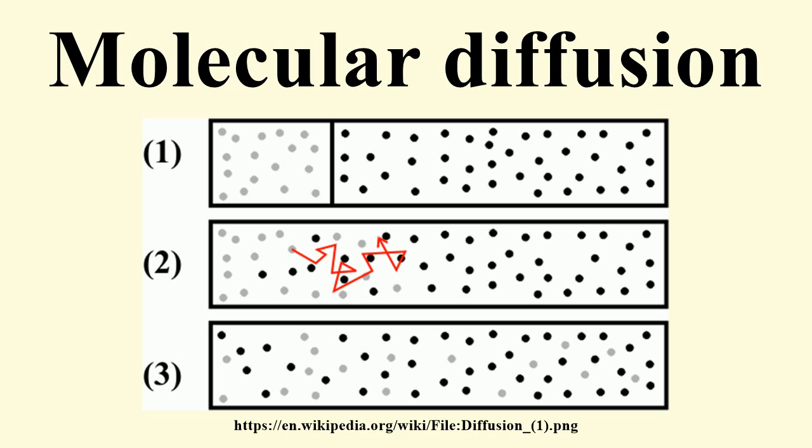Two adjacent compartments separated by a partition, containing pure gases A or B may be envisaged. Random movement of all molecules occurs so that after a period molecules are found remote from their original positions.